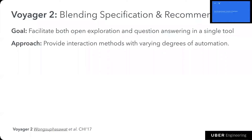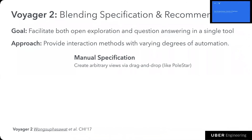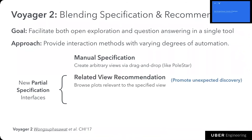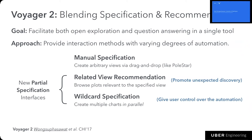We developed multiple prototypes. For the latest version called Voyager 2, we try to bring chart specification and recommendation into a single tool to facilitate both open exploration and question answering, providing multiple interaction methods with varying degrees of automation. We built Voyager 2 on top of Polestar: users can create arbitrary views using a drag-and-drop interface, but we added two new partial specification interfaces. Based on the view the user created, we recommend related views — similar to Amazon showing related items. We show related views to suggest alternative ways to summarize or encode the data, or to surface additional data fields. Another partial specification interface is wildcards, a way for users to create a gallery of multiple charts in parallel, giving users control over the automation.